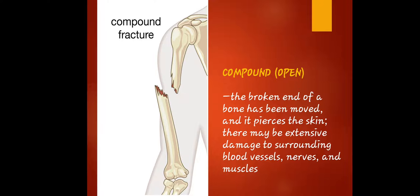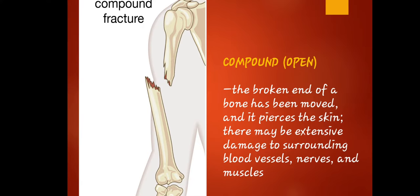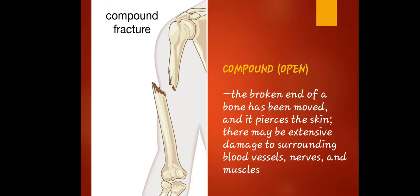If there is a simple fracture, of course there is also a compound fracture. This is quite dangerous because the bone is no longer in anatomic position. The broken end of the bone has moved and it pierces the skin. There may be extensive damage to surrounding blood vessels, nerves, and muscles. The simple fracture is closed while the compound fracture is open, meaning the bone has truly separated.